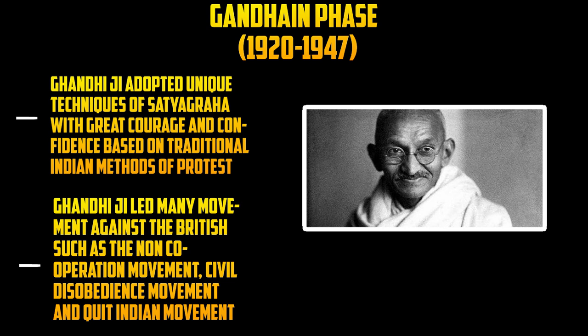A draconian law known as the Rowlatt Act was imposed in the year 1919. According to this act, full powers were given to the police to arrest Indian people without any warrant. The Punjab also particularly protested against the Rowlatt Act. During the protest, two prominent leaders — Dr. Satyapal and Saifuddin — were arrested by the British. This news spread all over India.